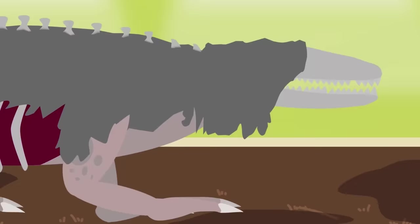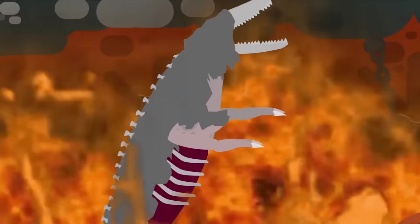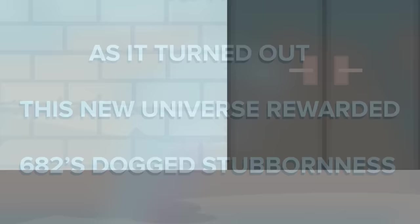It would find its prey, somehow, and when it did, it would put them through hell. And as it turned out, this new universe rewarded 682's dog stubbornness, because when it passed through a seemingly random hallway after hours of searching, it was in a different place entirely.